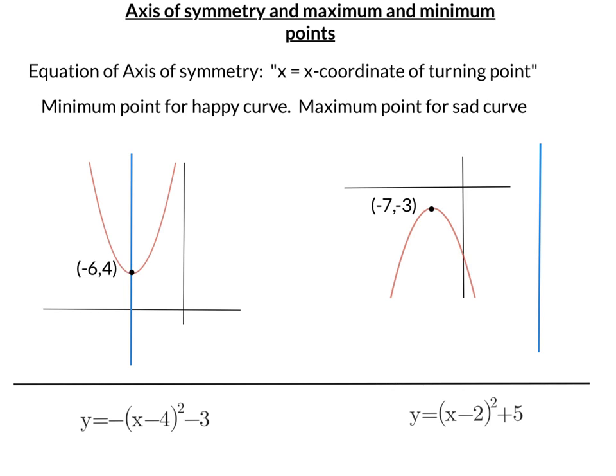So that's where that one would be, and over here, that's where that one would be. To find the equation of the axis of symmetry, it's x equals the x-coordinate of the turning point.